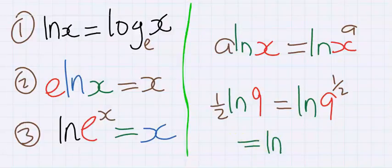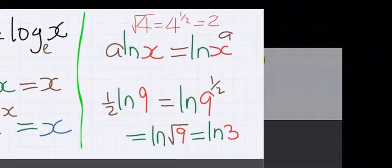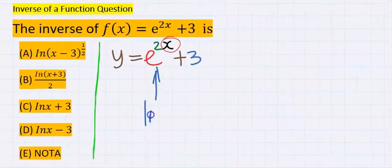Because square root of 4 is the same thing as 4 to the power of 1/2. √9 is equal to 3, hence this is ln 3.